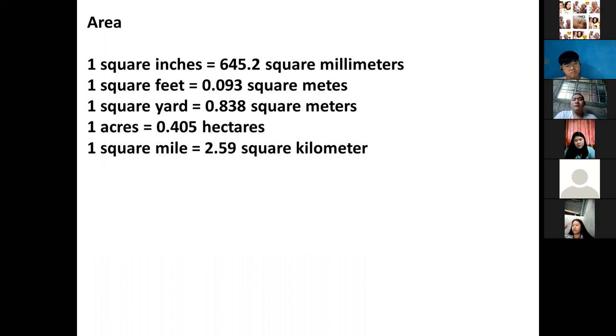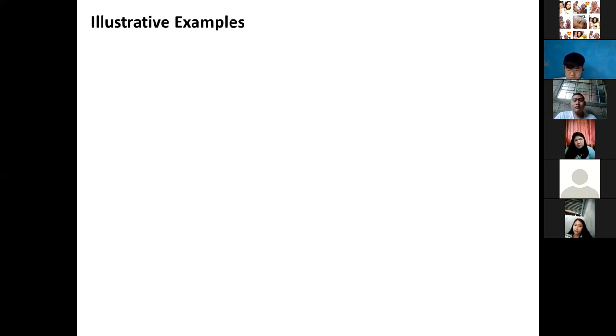And then we also have area, and these are the following: square inches to square millimeters, square feet to square meters, square yards to square meters, acres to hectares, square mile to square kilometers. And actually, if you just know mile and kilometer, you can still derive those. You can create your own conversion factors. You can derive. Anyway, I'll teach you that later.